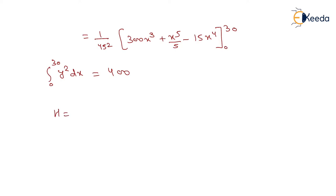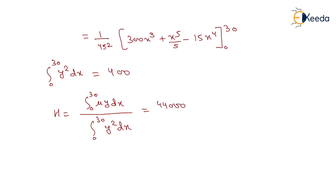We can now compute H as the integral from 0 to 30 of mu·Y·dX divided by the integral from 0 to 30 of Y²·dX. Putting in the values, H equals (44,000/9) divided by 400, giving H equals 12.22 kilonewtons.